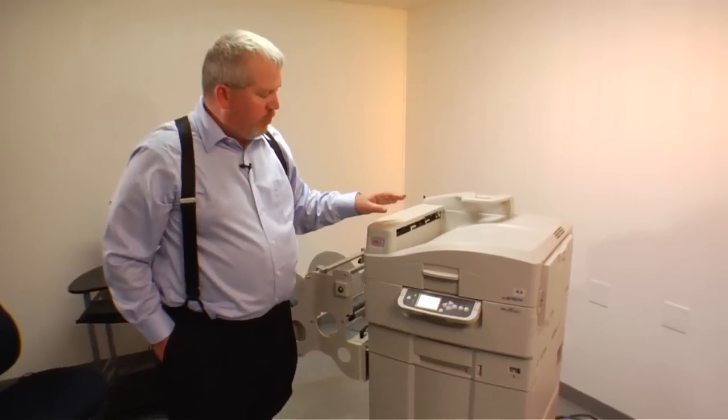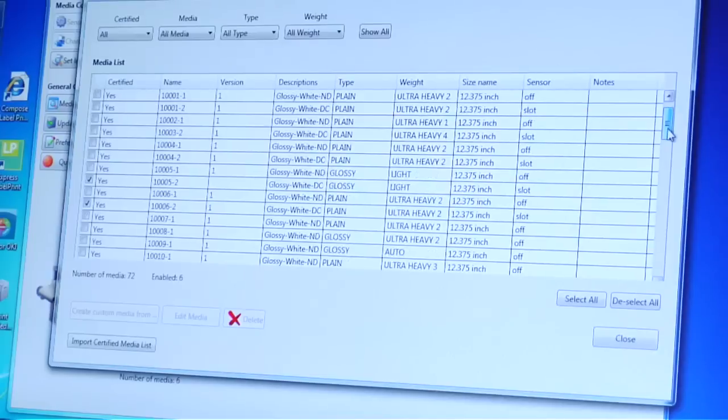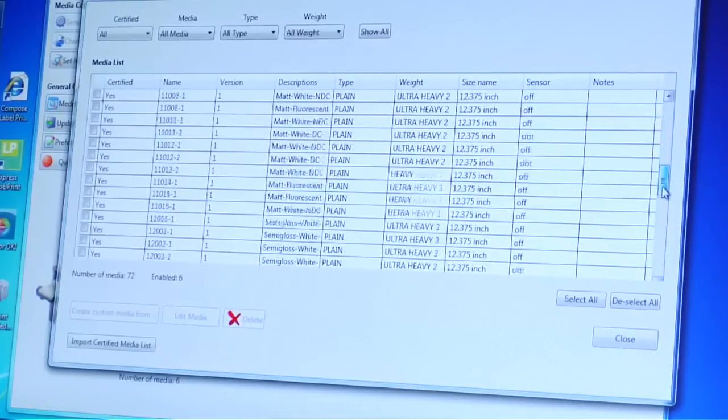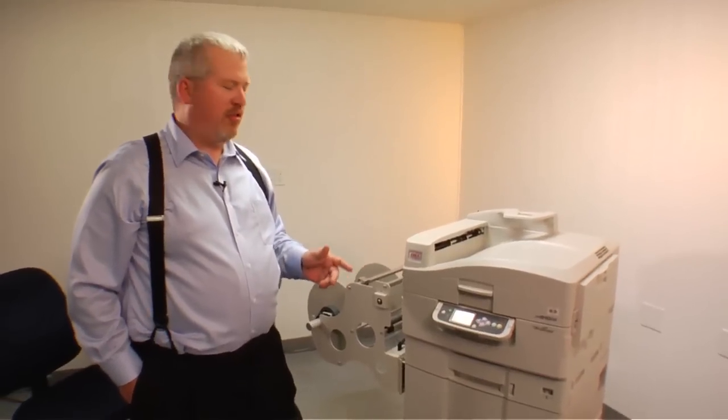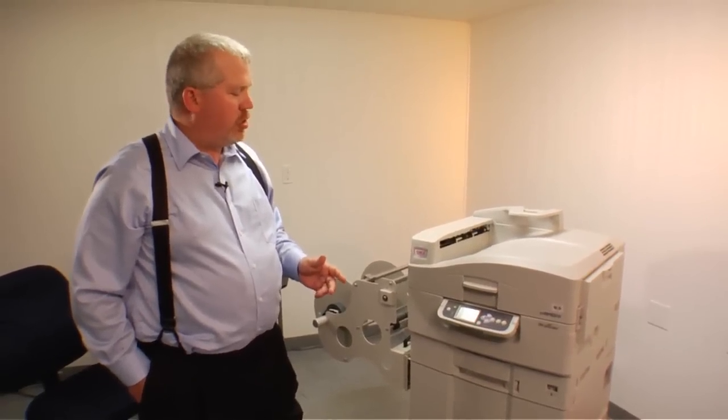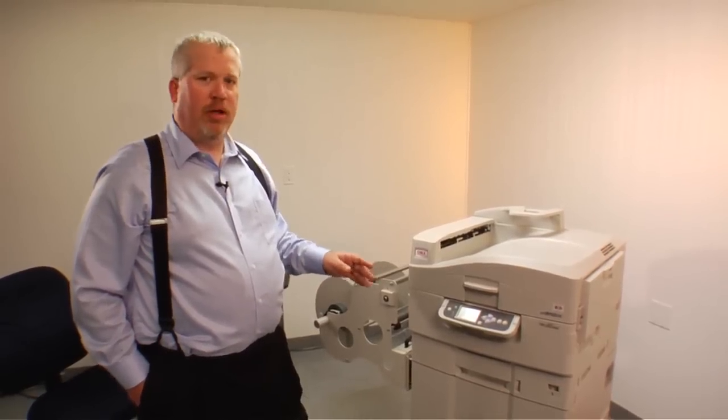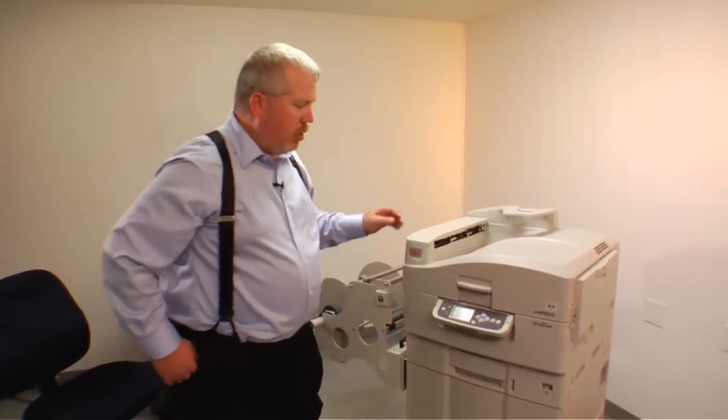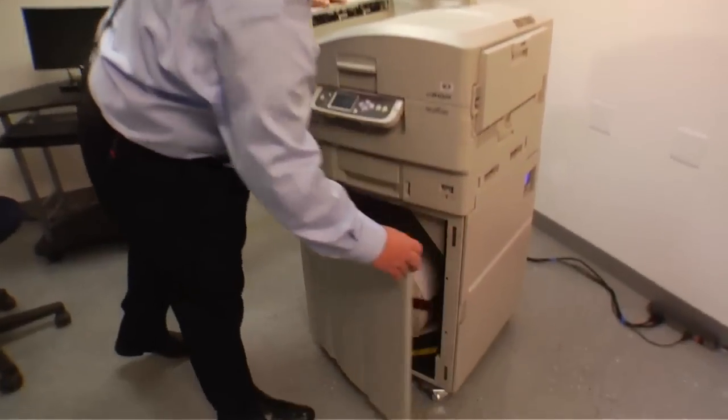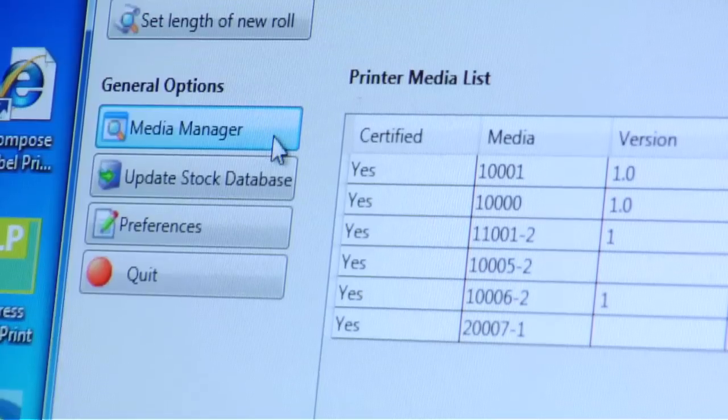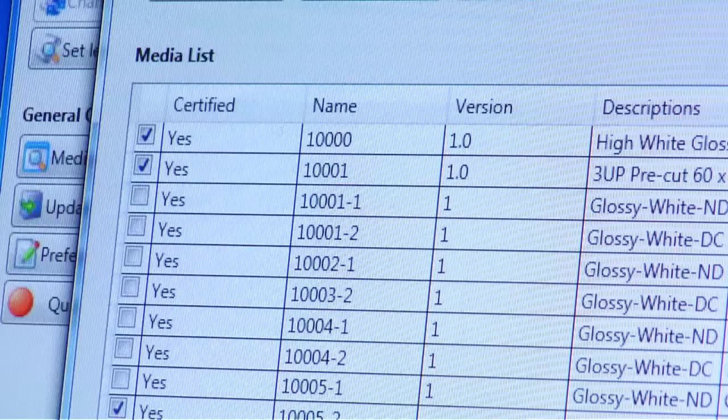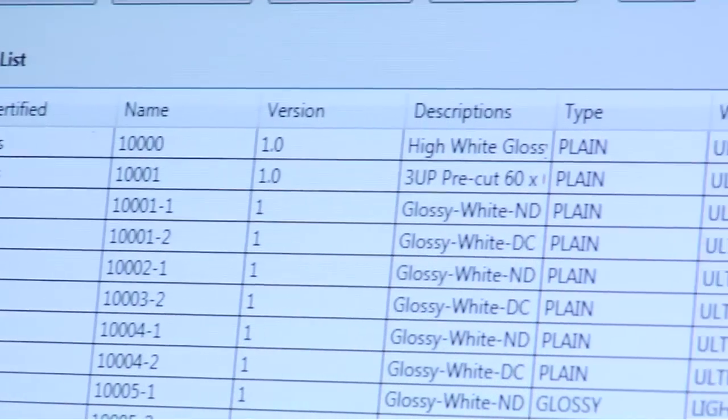As we talk about media, right now there's about 80 to 90 pre-qualified medias that are on pre-converted stock. There's 46 processes or 46 things that are checked to ensure that the temperature and the running speed is correct and it correlates to the proper media. In this case here, we've got a three across four by six label on a semi-matte stock.